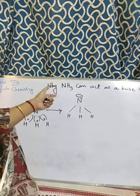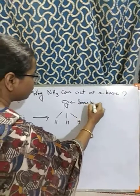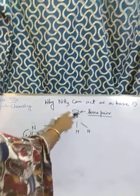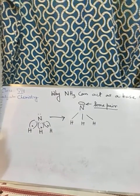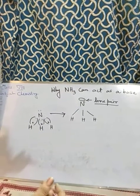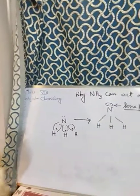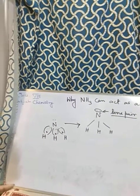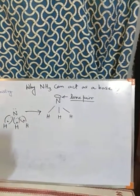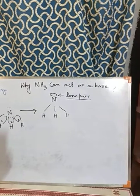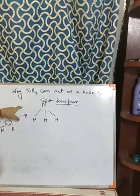This lone pair — the pair of electrons not taking part in bond formation — is on nitrogen. Because of this lone pair, nitrogen can donate this lone pair to any acid. In this manner ammonia can act as a base. Any substance that can give its lone pair to an acid and react with the acid can be called a base. Since this lone pair on nitrogen is available to donate to an acid, we consider ammonia as a base.